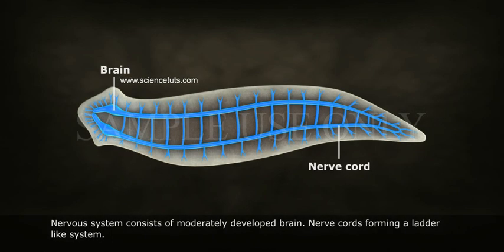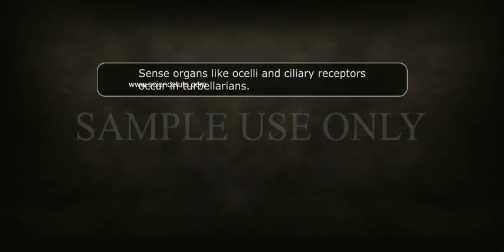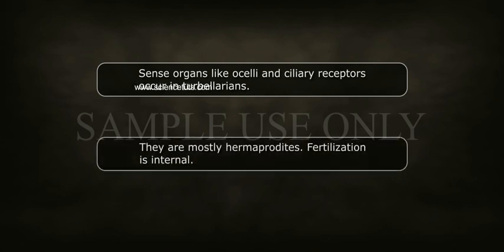The nervous system consists of a moderately developed brain and nerve cords forming a ladder-like system. Sense organs like ocelli and ciliary receptors occur in turbellarians.